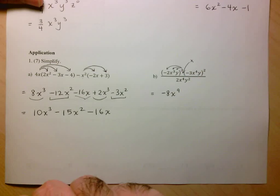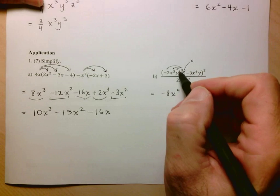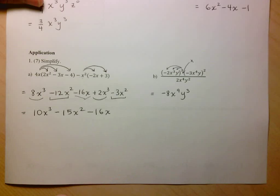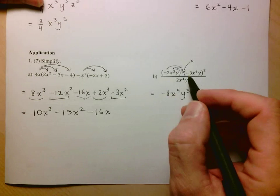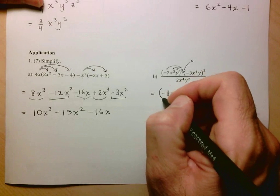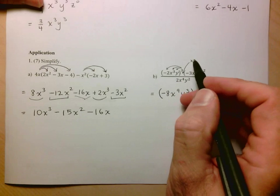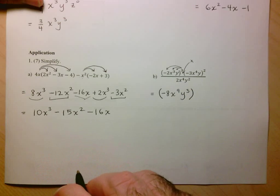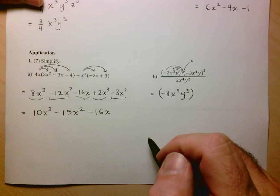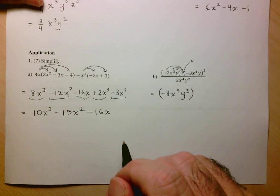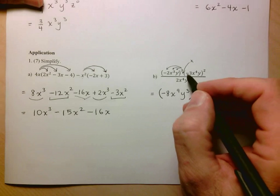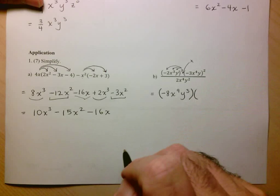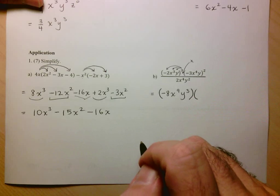With a power of a power, you multiply the exponents. So this becomes x to the 9. Here you have y to the 1 cubed: 3 times 1 is 3, so y cubed. Because I still have to multiply this to another expression, I'm going to put brackets around it to avoid accidentally reading the multiplication symbol as a variable x.